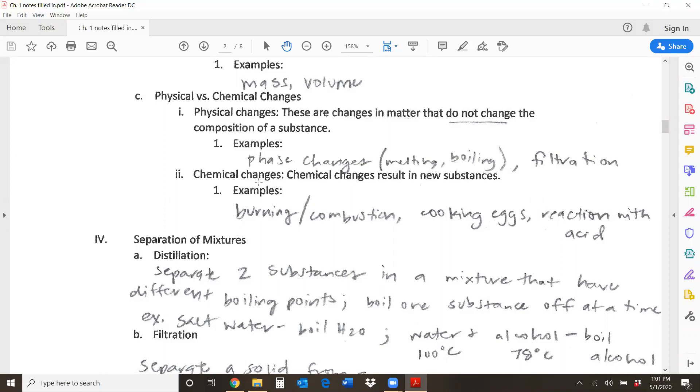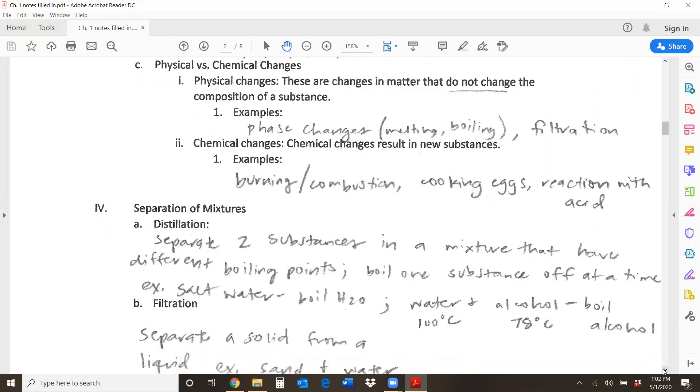Whereas chemical changes are needed to separate a compound or break a compound up. You have to actually break bonds, change the substance into something different. So take water and break it into hydrogen and oxygen gas. Examples are burning or combustion, cooking something like eggs, reacting something with acid. Any kind of reaction would be a chemical change.